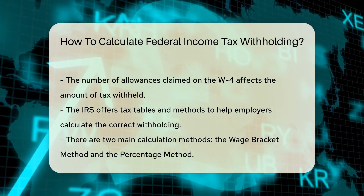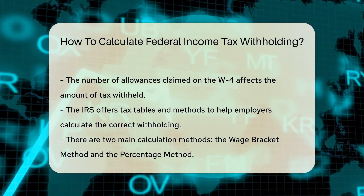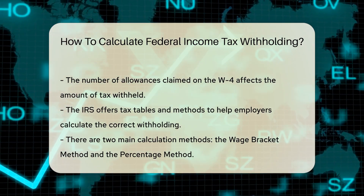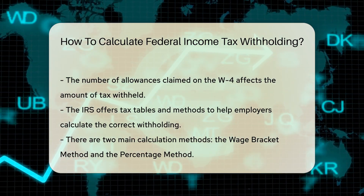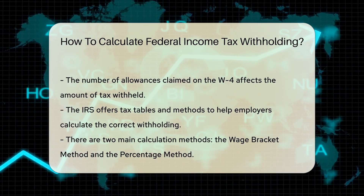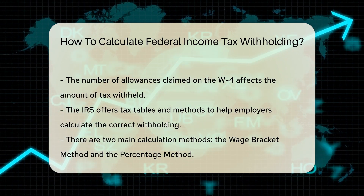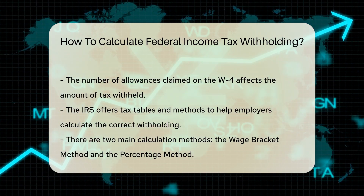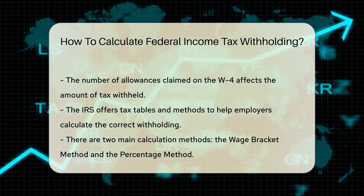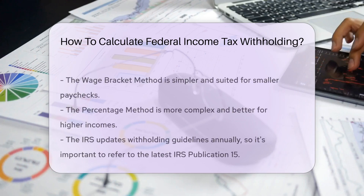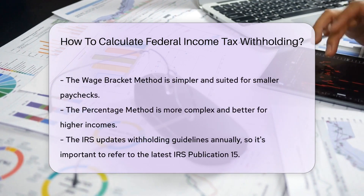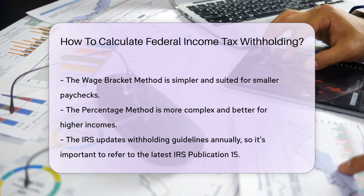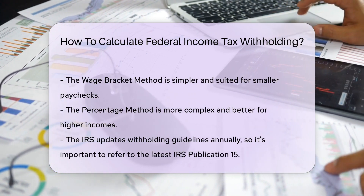The more allowances claimed, the less tax withheld. The IRS also provides tax tables and methods — these are like secret codes to crack the withholding amount. Employers use the information on the W-4, along with these tables, to figure out the withholding. There are two main methods: the wage bracket method and the percentage method. Both are sanctioned by the IRS and will lead you to the withholding amount.